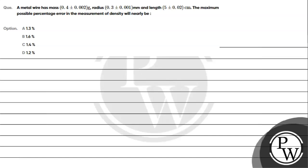Hello bachau, let's read the given question. A metal wire has mass 0.4 ± 0.002 gram, radius 0.3 ± 0.001 mm, and length 5 ± 0.02 centimeter. The maximum possible percentage error in the measurement of density will nearly be: option A 1.3%, option B 1.6%, option C 1.4%, option D 1.2%.